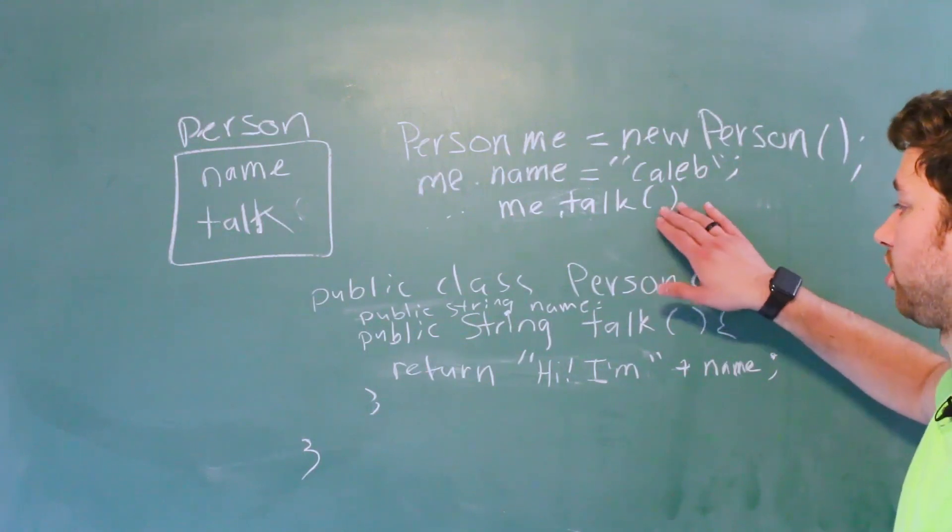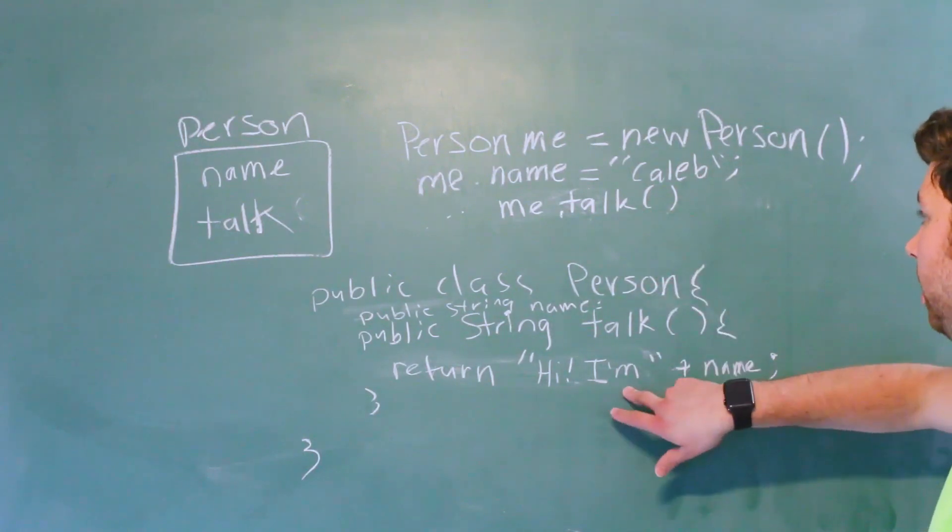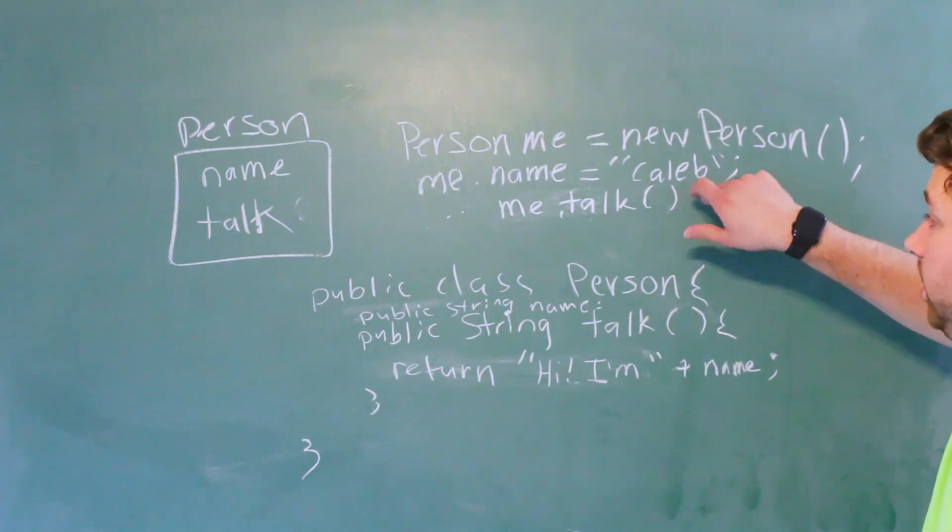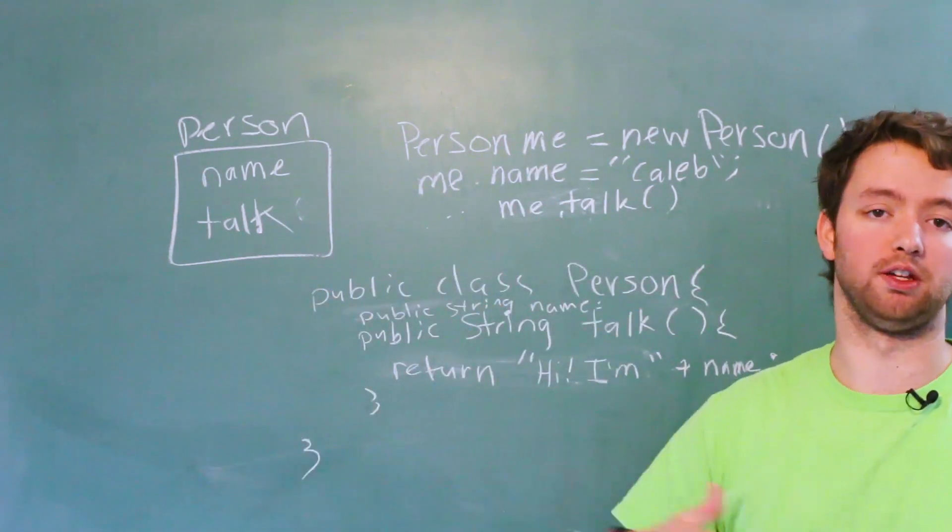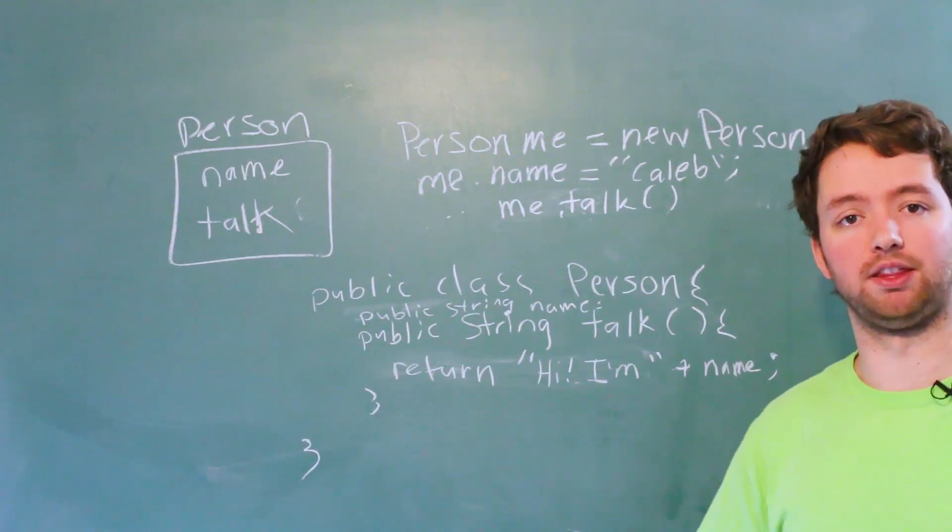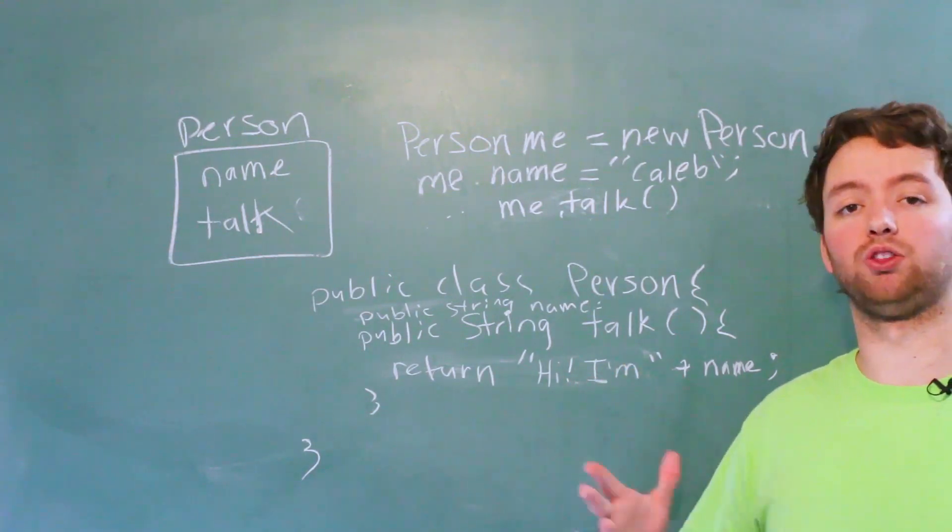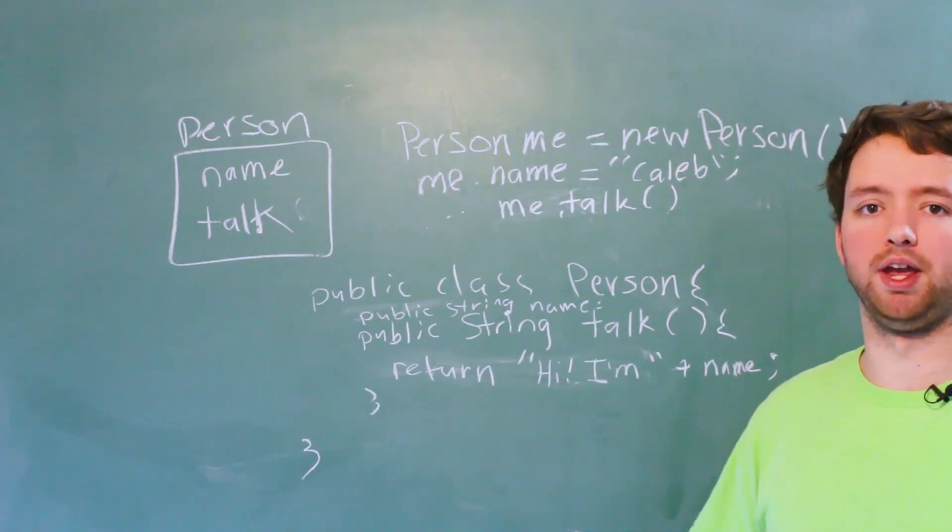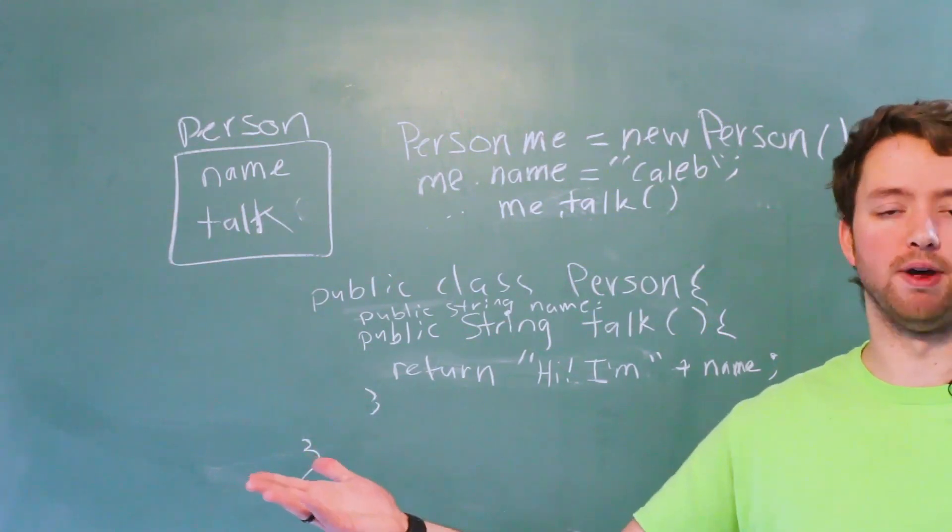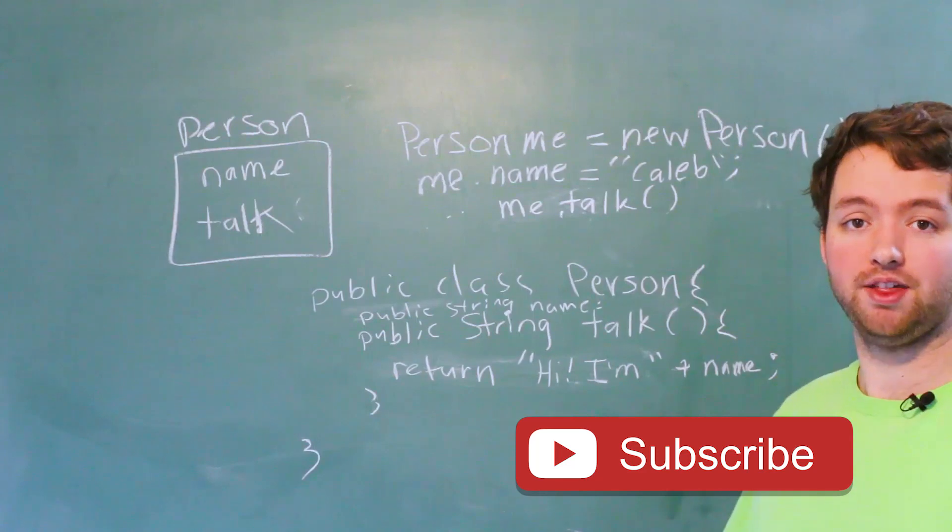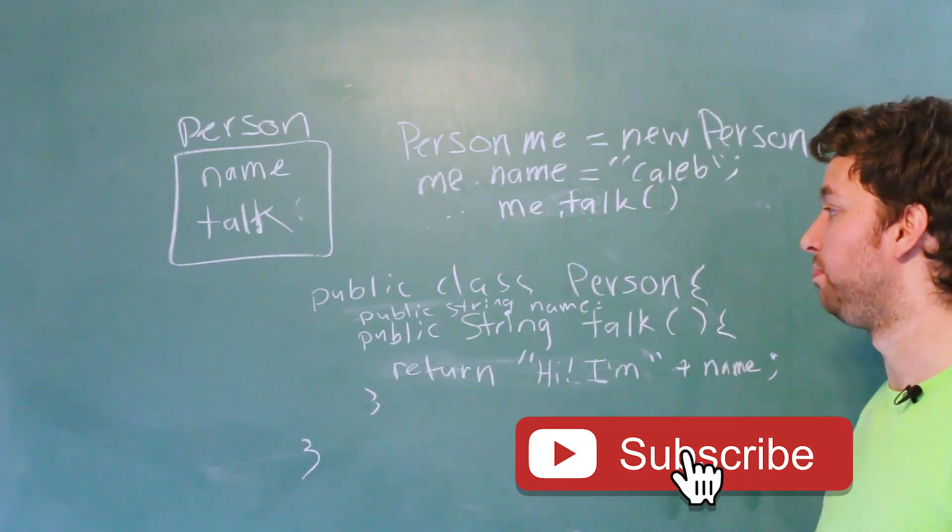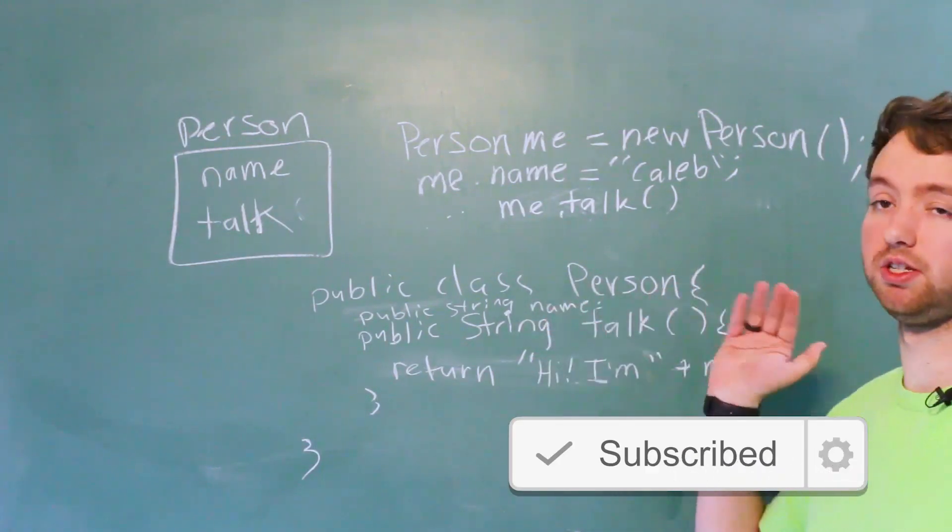So this method will return hi, I'm Caleb. And we can do whatever we want with that string, you could output it, you could pass it to another method, whatever you want. So that is the basics of methods. There's variations we're going to get through. So for example, static void main, that's the main method that everything is executed from. We haven't talked about static, but we will be getting into that. But for now, all you really need to know is that methods allow us to do something.